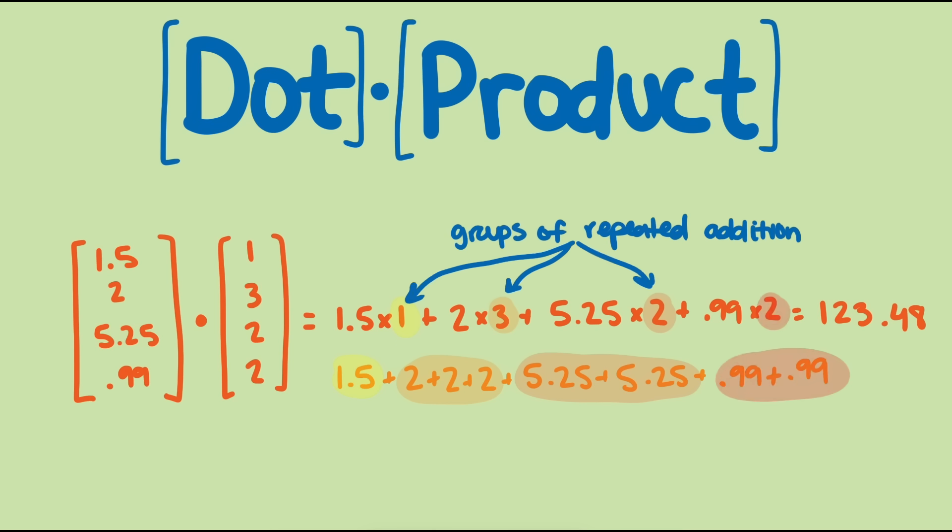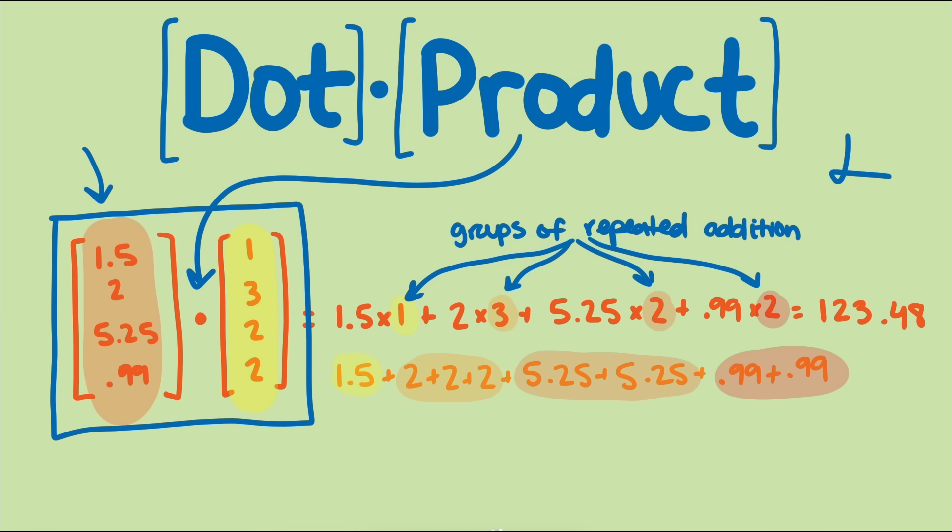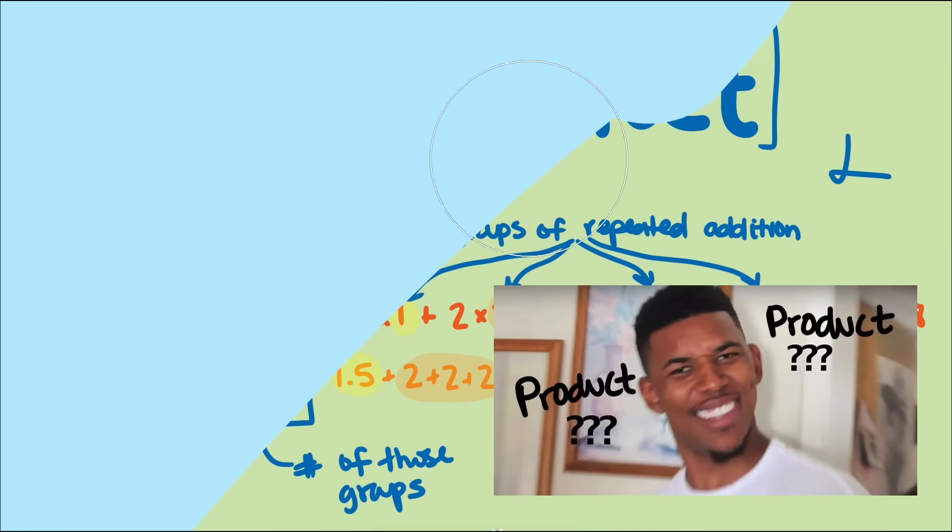So what we have here are groups of repeated additions. To try to write this as one product, we need to list the separate values and how many times each of these values are repeated. And that is what we have done with our two vectors, which represent these two lists. In other words, we can think of one vector as the size of the different groups and the other vector as the number of groups of those sizes. That still might not convince you that the dot product operation should be considered a product. So here's another reason.